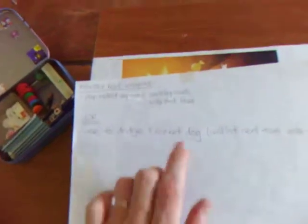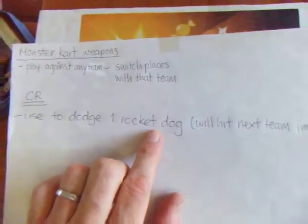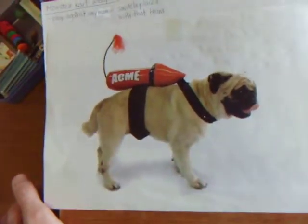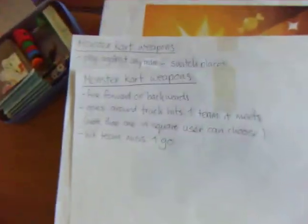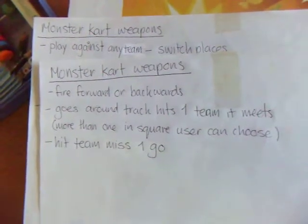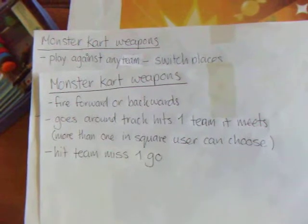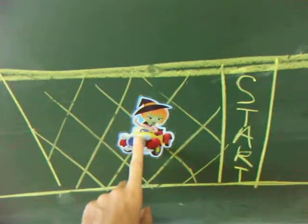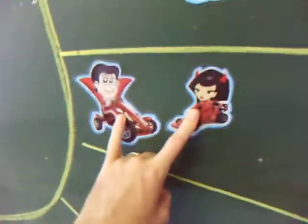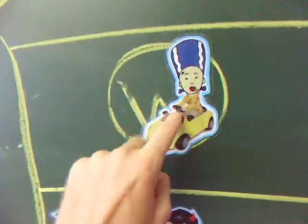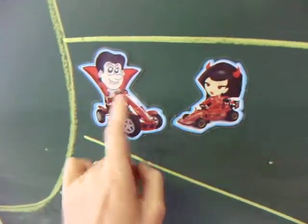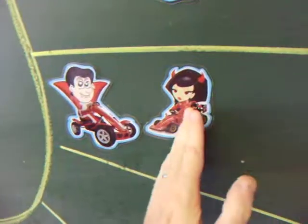This can also be used defensively. You can use it to dodge a Rocket Dog attack. The Rocket Dog attack can be fired forward and goes around the track until it hits the first team it meets. If there's more than one in that square, the user can choose which one it is and the hit team will miss a go. So for example, if this team fires a Rocket Dog forward, it would hit one of these two teams as they are the nearest ones. They cannot shoot this team. It has to hit the nearest people.